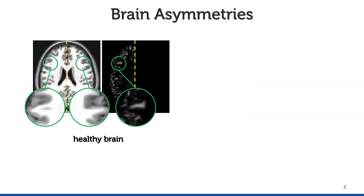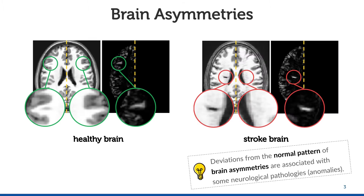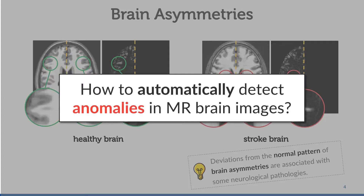The human brain is roughly symmetric, but the symmetry is not perfect. We indeed have some brain regions, like the cortex, where we have some normal degree of asymmetries. But it's well known that deviations from the normal pattern of asymmetries are associated with some brain diseases and disorders — for example, this stroke inside the red circle. So we have a question: how to automatically detect anomalies in MR brain images?